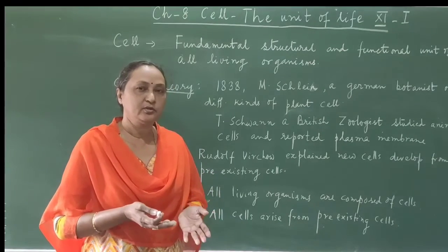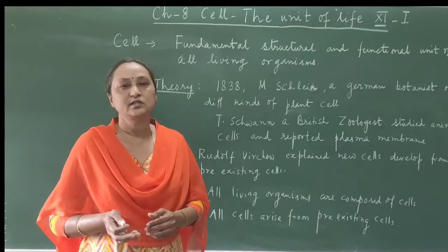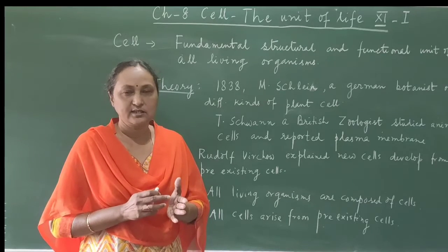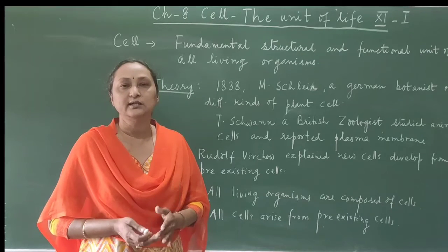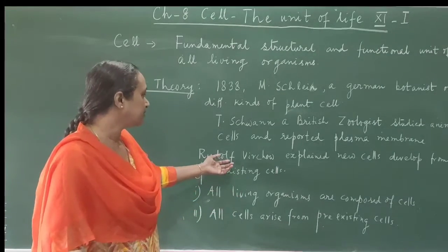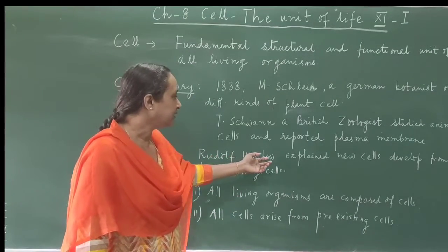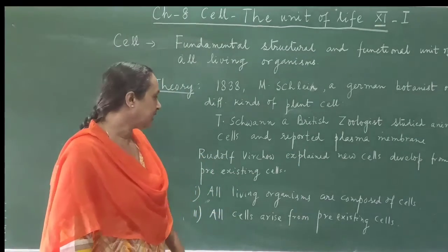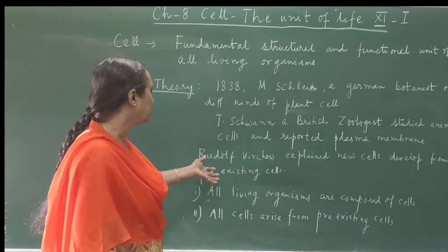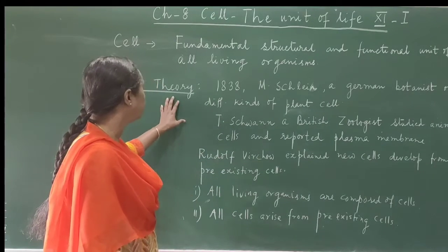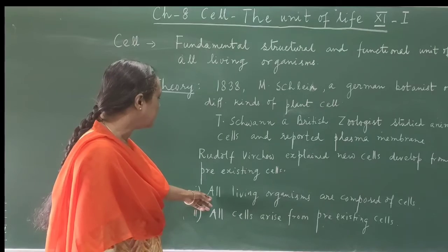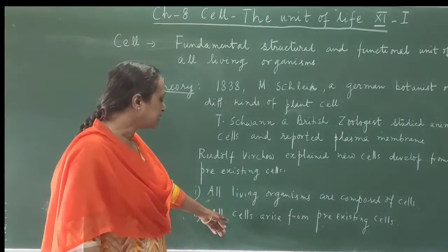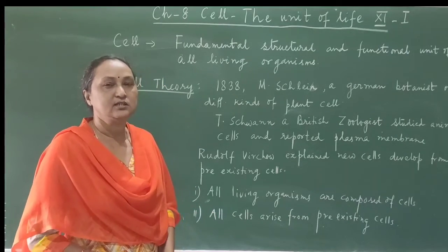Because the process of cell division was discovered quite late — when a cell divides, two new cells develop from that single cell. That explanation was developed by Rudolf Virchow. At last, all the main points were combined together, and the cell theory was proposed: all living organisms are composed of cells, and all cells develop from pre-existing cells.